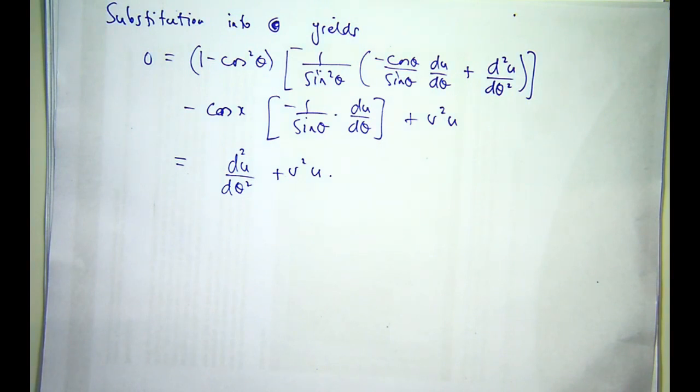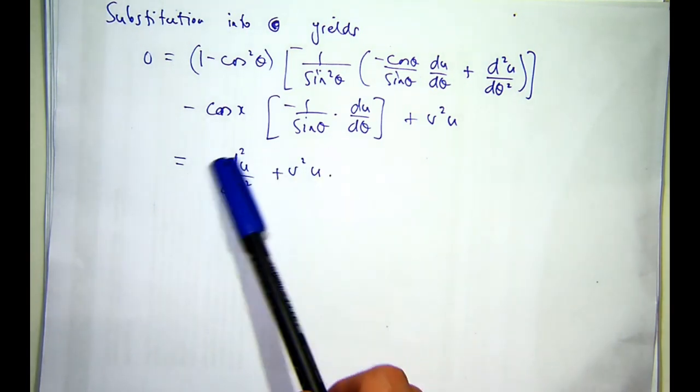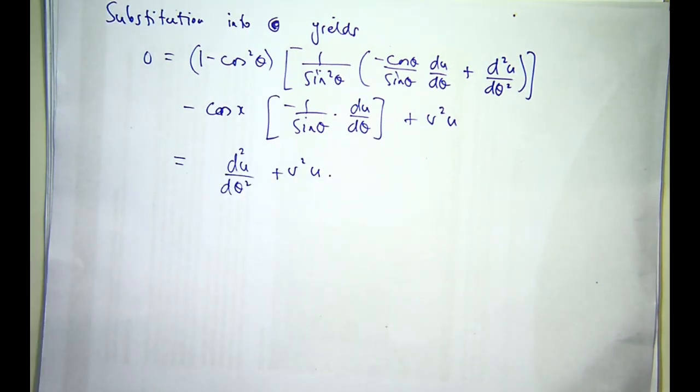Essentially, you get d squared u d theta squared plus v squared u equals 0. That is a linear, second order, homogeneous problem with constant coefficients. So that's really amazing that a substitution like that can reduce something horrendously complicated down to something extremely simple.